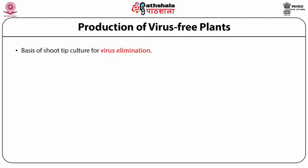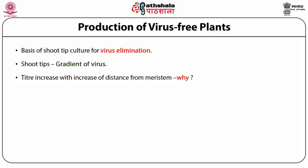The basis of shoot tip culture for virus elimination is that there is a gradient of virus in the infected plant body, and the titer of the virus increases with distance from the meristem. Why is this so? The suggestions are that it is because of the high metabolic activity in the meristem that the virus does not persist there. The meristem tip also produces auxin, which probably discourages the multiplication of viruses.